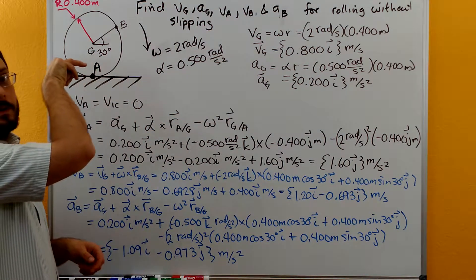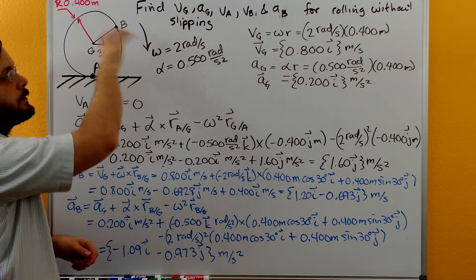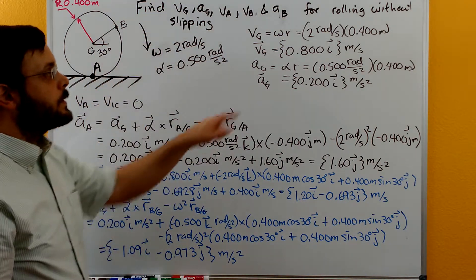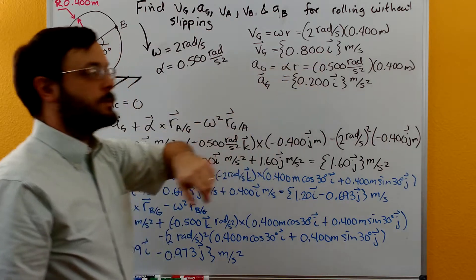We know that the velocity of the center of gravity is going to be going in this direction if it's rolling in this direction. So we get 0.8i meters per second.